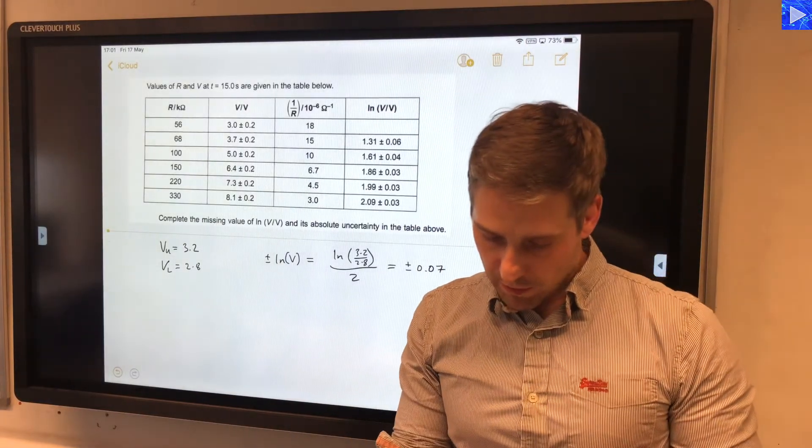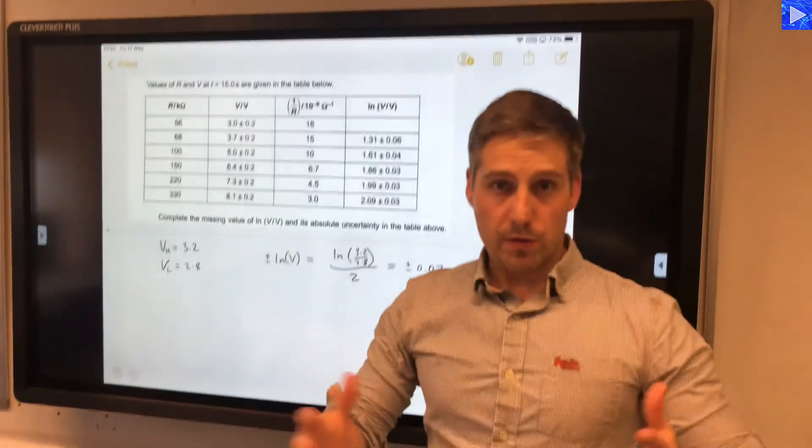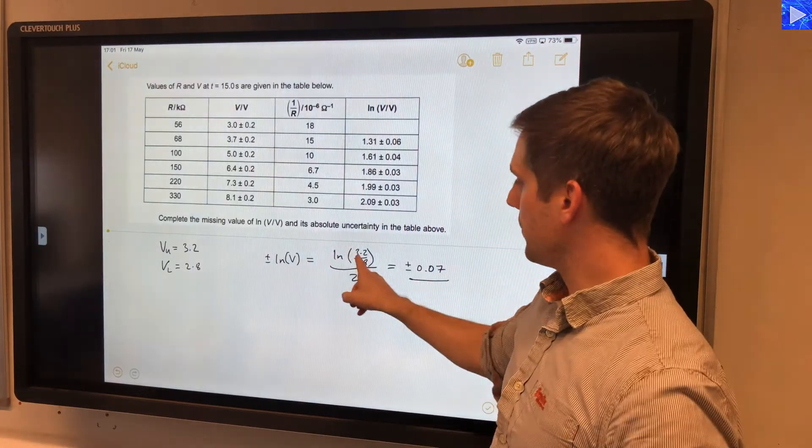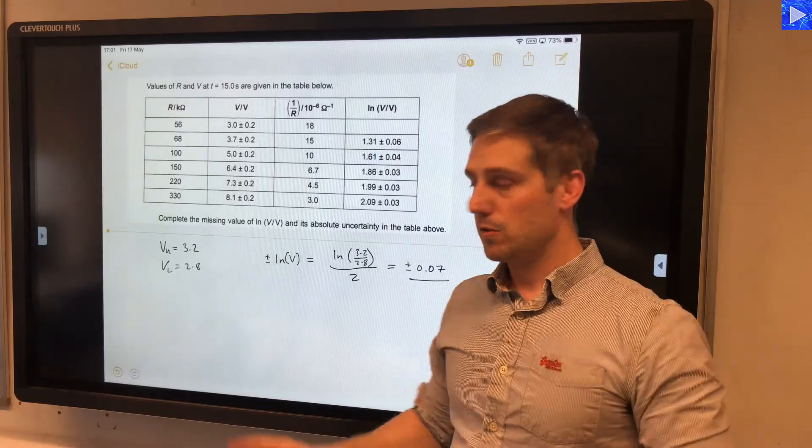So that's how you work out the absolute uncertainty in log values—by working out the range, divide it by 2. And I showed you a short simplification that you can do by using the log rule with that ratio.